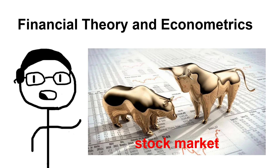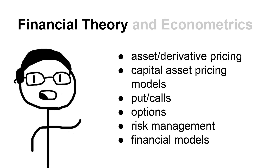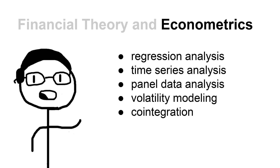Onto our next major topic: financial theory and econometrics. Considering you'll be dealing with financial markets daily, all quants need at least a basic understanding of the field. Topics such as asset derivative pricing, capital asset pricing models, puts, calls, options, futures, risk management, the types of risk, and common financial models are all essentials you'll need to know. Furthermore, econometrics covers essential tools for analyzing economic data — topics such as regression, time series, panel data analysis, volatility modeling, and co-integration are also things you should learn.